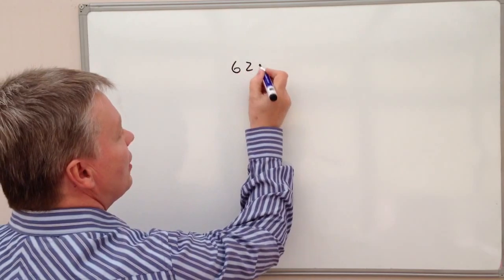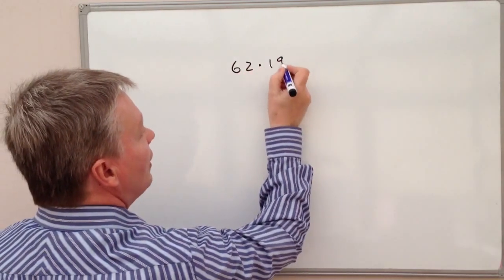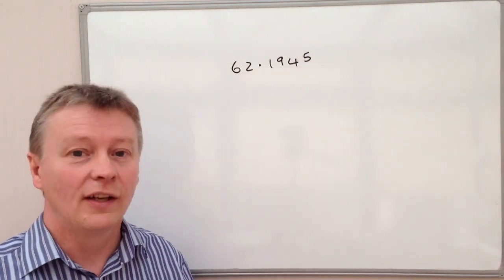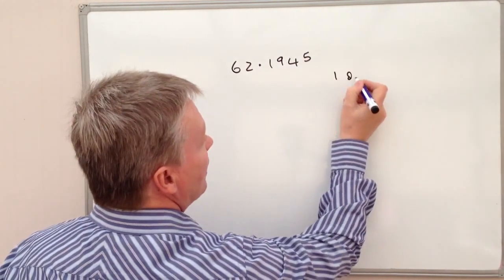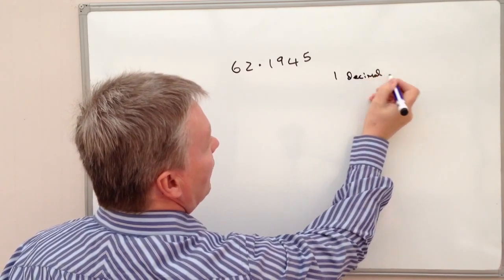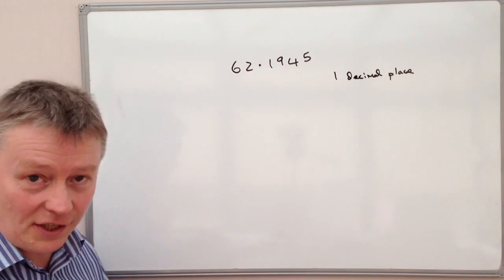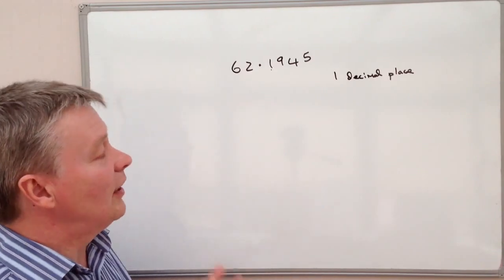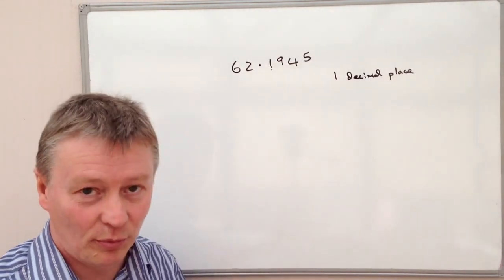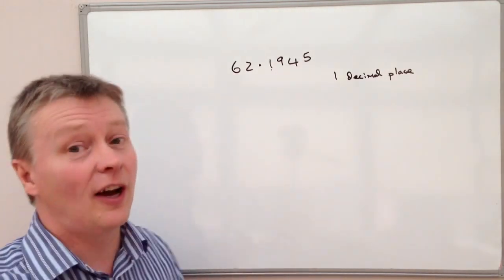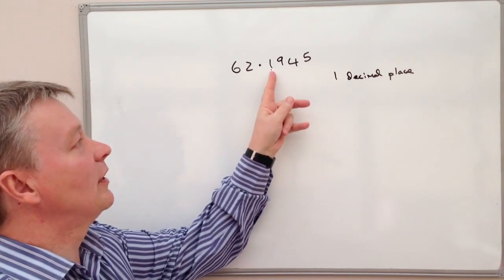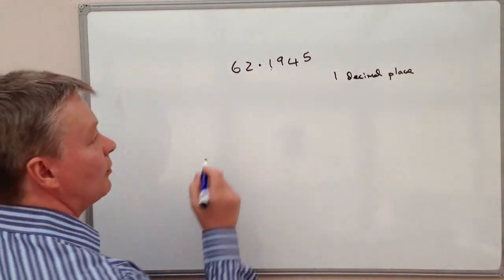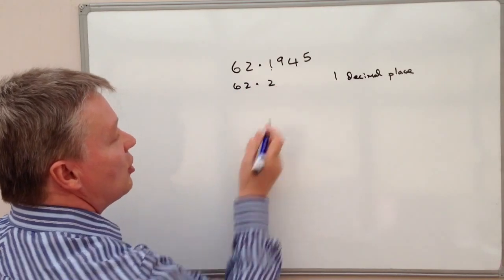So what it means is, let's say we've got a number which is 62.1945. And what I'm going to do is I'm going to round that to one decimal place. What I do is I look at the first decimal place, and the first decimal place here is the number one. And then I look at the second decimal place. And if the second decimal place is five or above, then that affects the one here. Now in this particular case it is, it's above five. So therefore to one decimal place this number becomes 62.2.